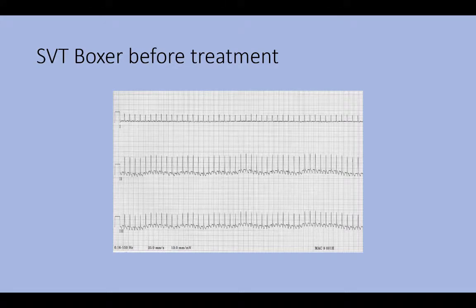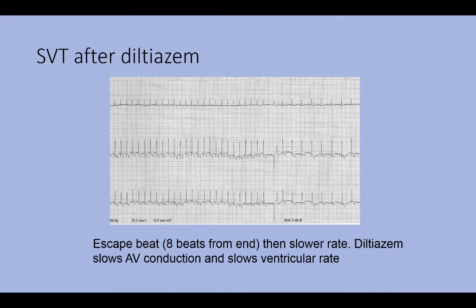This is an ECG from supraventricular tachycardia in a boxer before treatment. Lead 2 is in the center, and you can see an upright and narrow QRS, a very rapid rhythm, and no visible P waves. If you look at the R-to-R interval, you would see that it is irregularly irregular. After giving diltiazem, the rate slowed enough that we got an escape beat — a wide, bizarre complex coming from the ventricle — and then we have a supraventricular tachycardia at a much slower rate. So diltiazem is slowing conduction through the AV node and slowing the rate enough to improve perfusion.